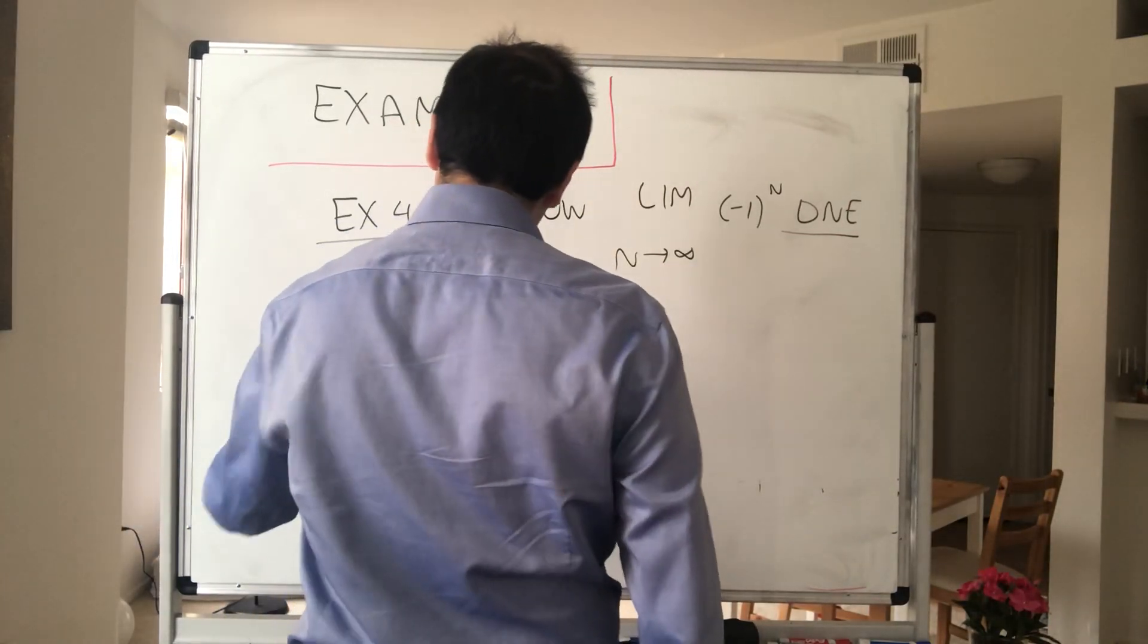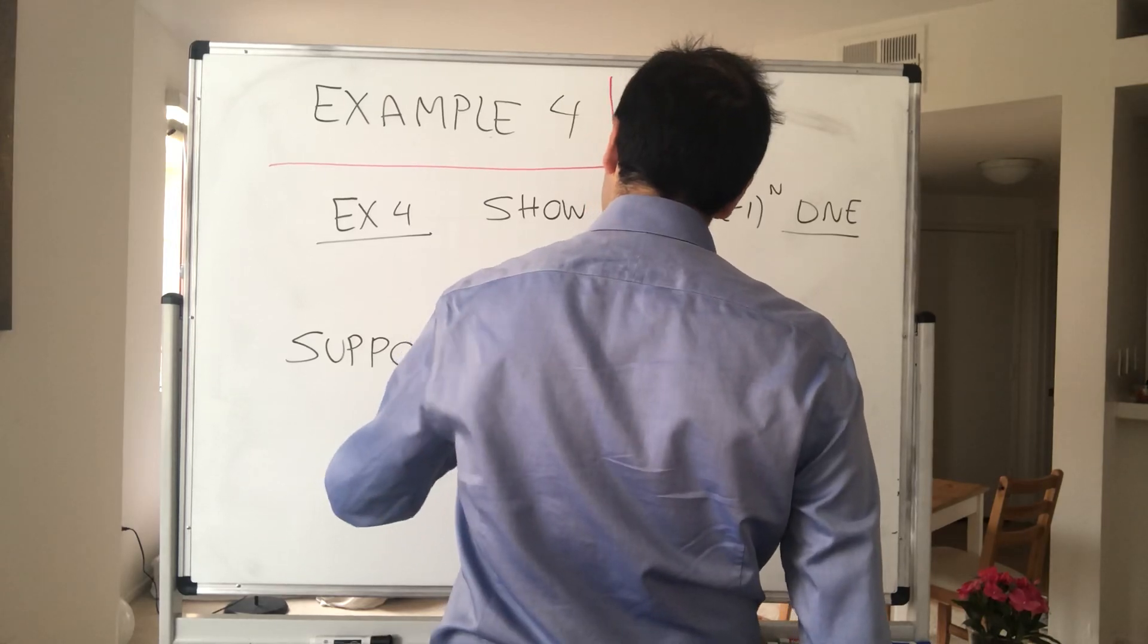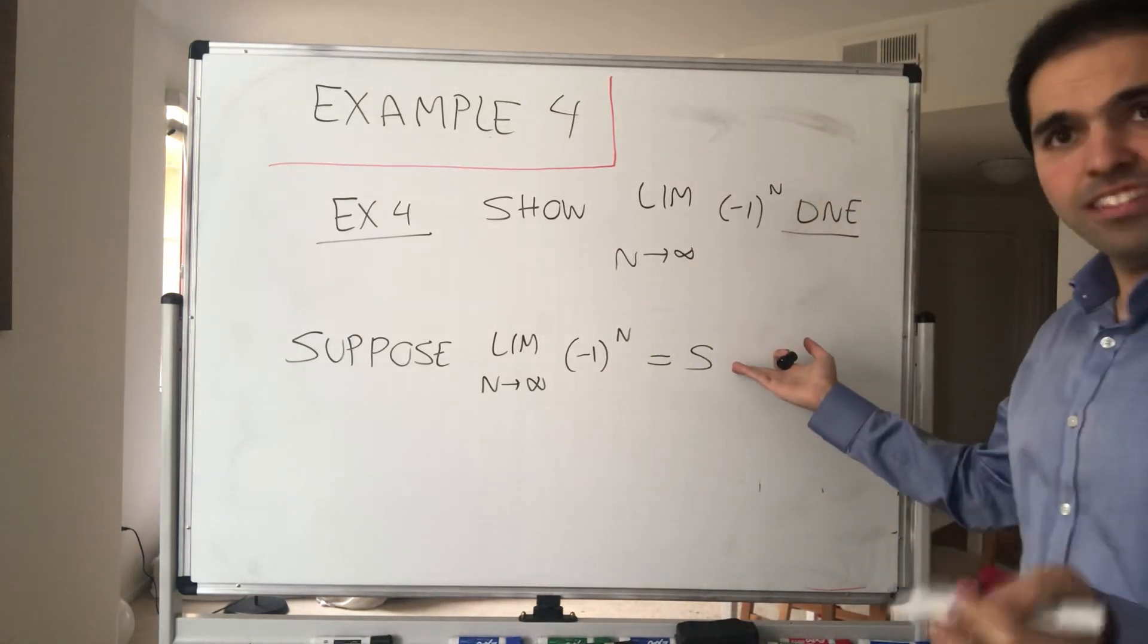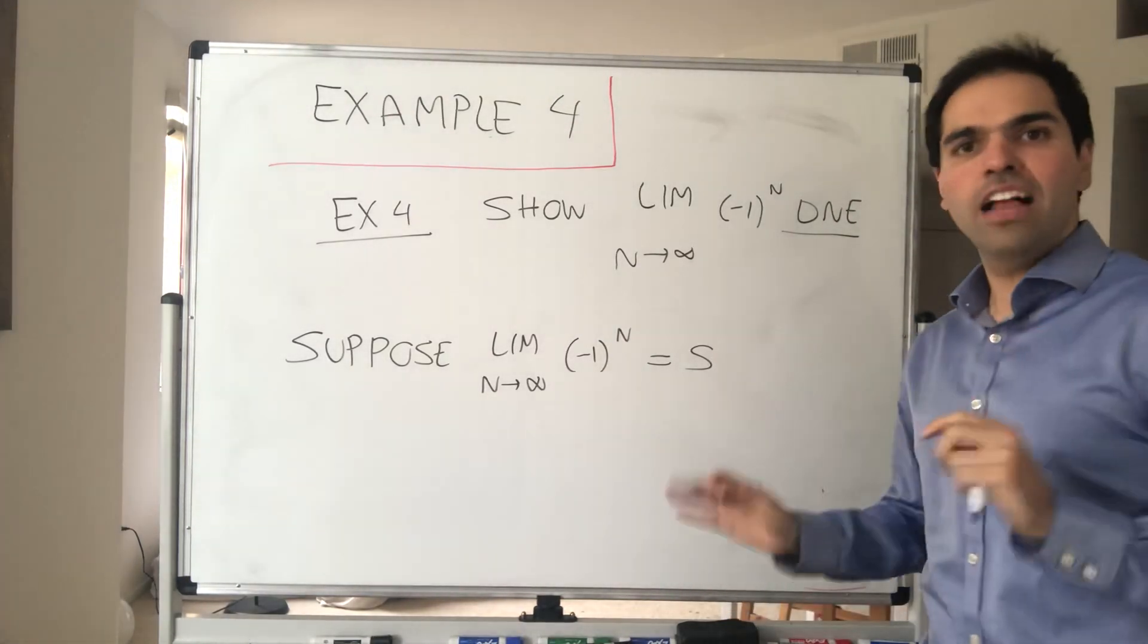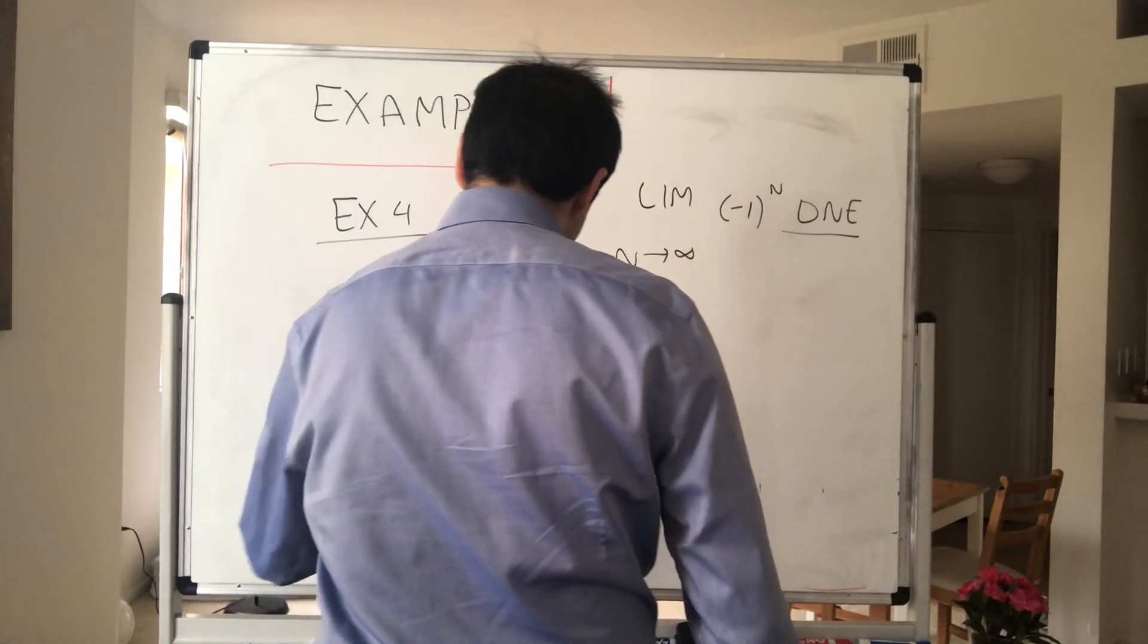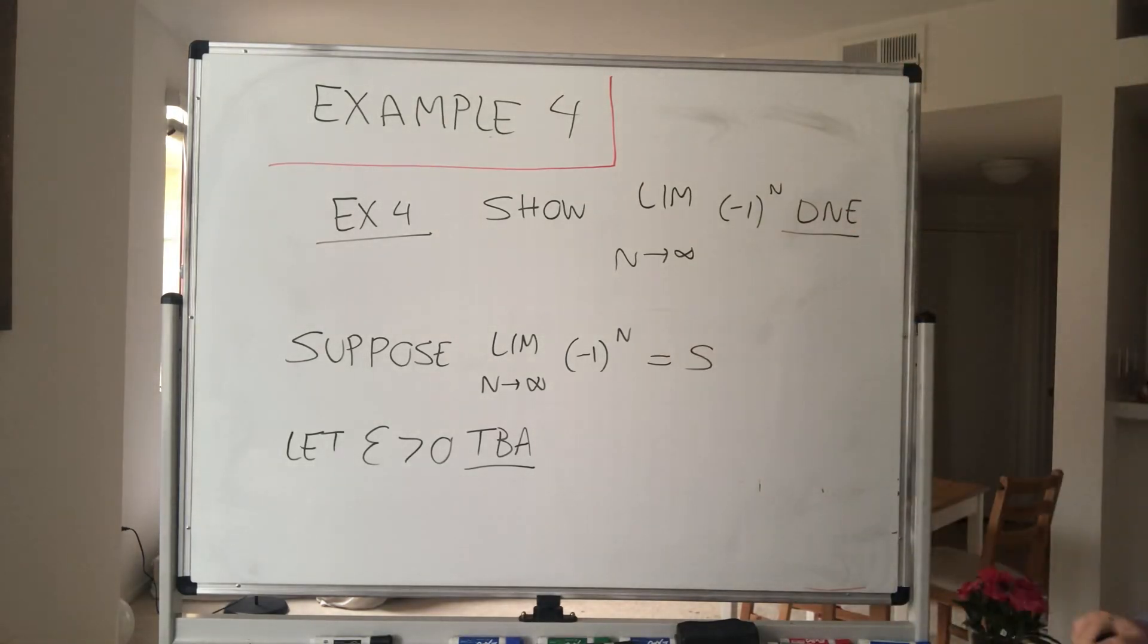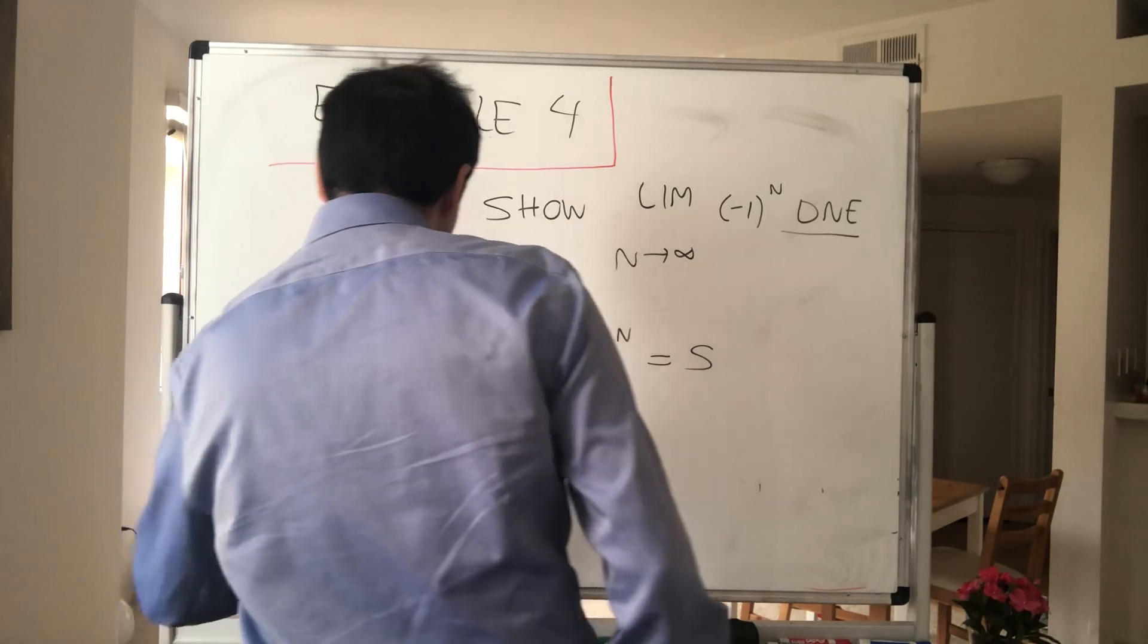So suppose, in particular, that the limit as n goes to infinity of (-1)^n equals s. And what does that mean? It has to do with errors. So let epsilon be some value that's to be announced. The book tells you what the value is, but I don't like it because I want you to discover what it is.